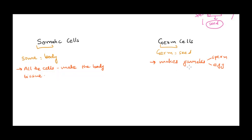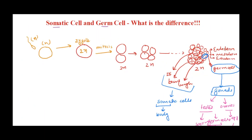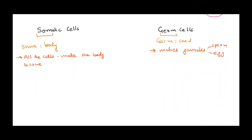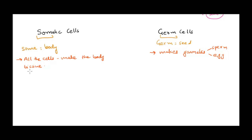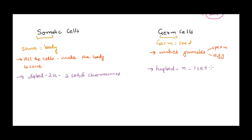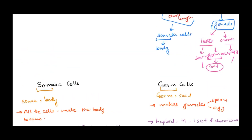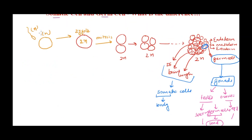We are diploid organisms, so all somatic cells are also diploid — that means 2n, meaning we have two sets of chromosomes in all our cells, one from mother and one from father. In the case of sperm and egg, they are haploid — they have only one set of chromosomes. That makes sense because we need them to be haploid in order to give us a diploid zygote and a diploid organism.